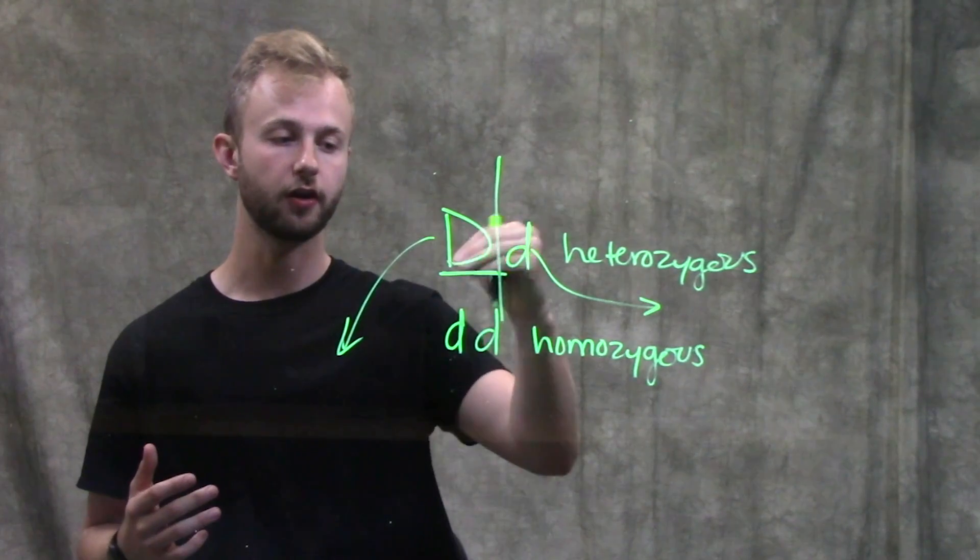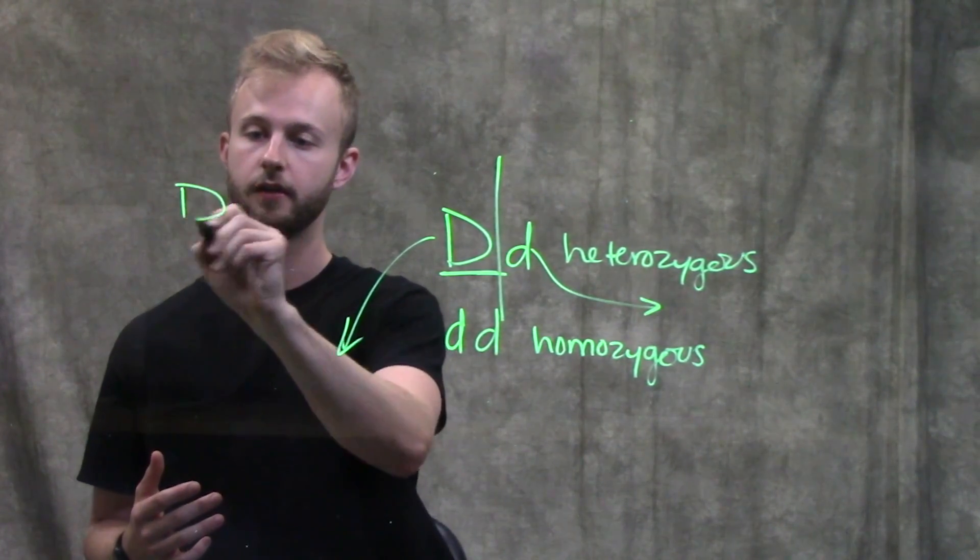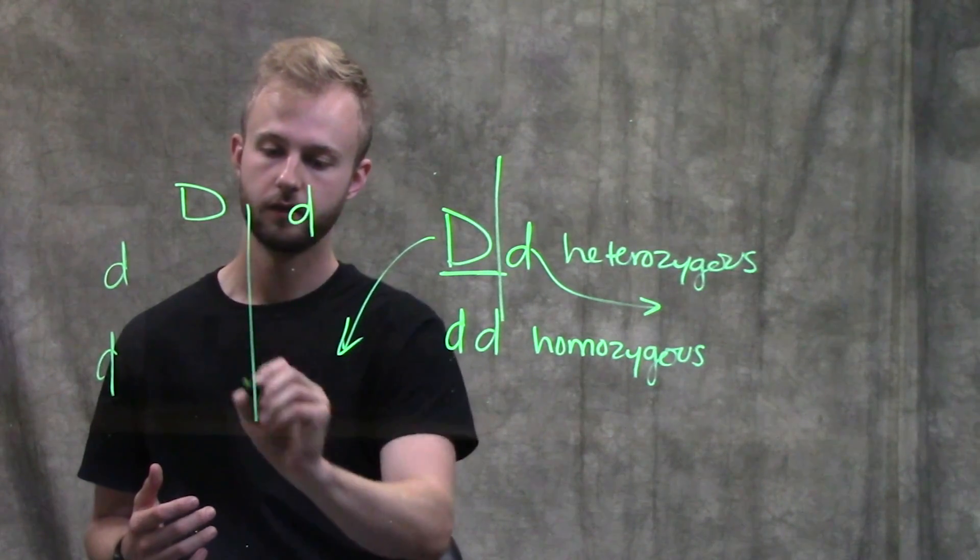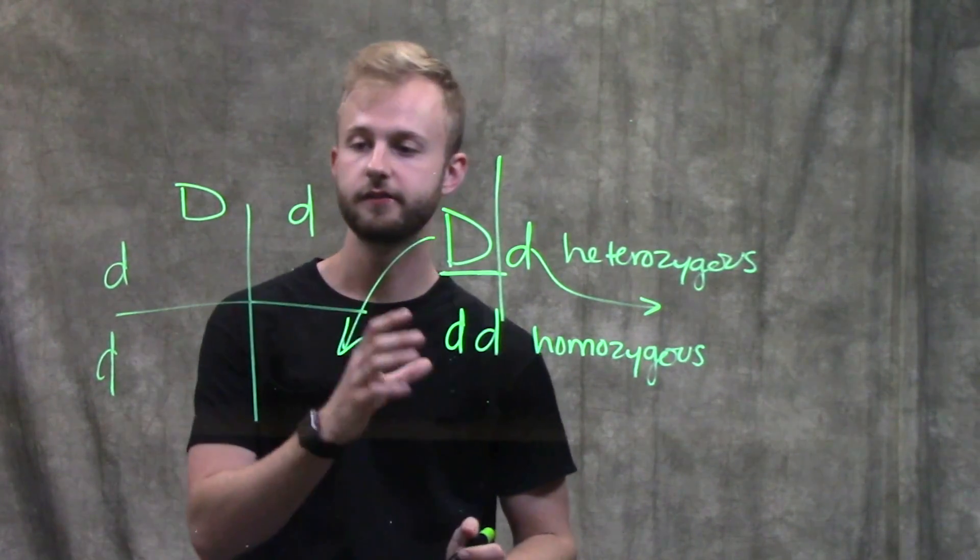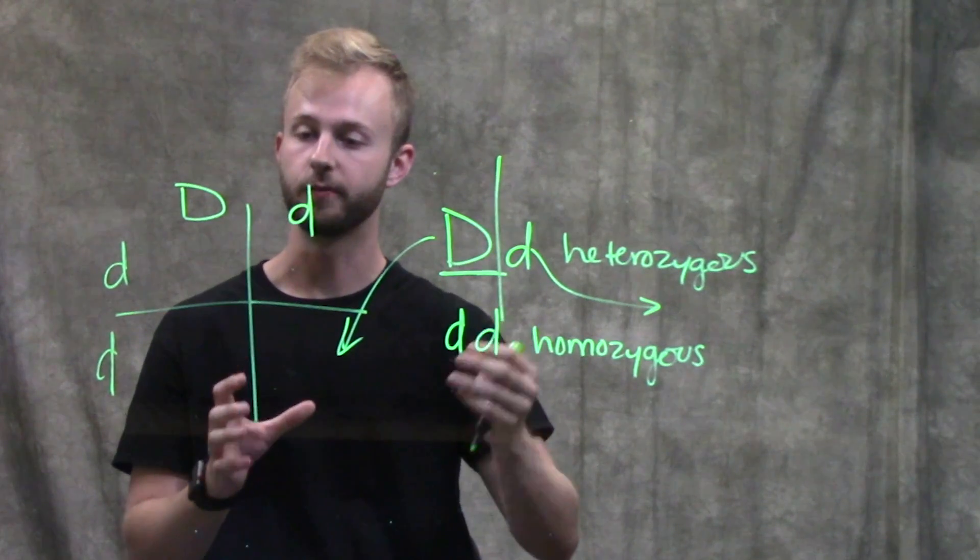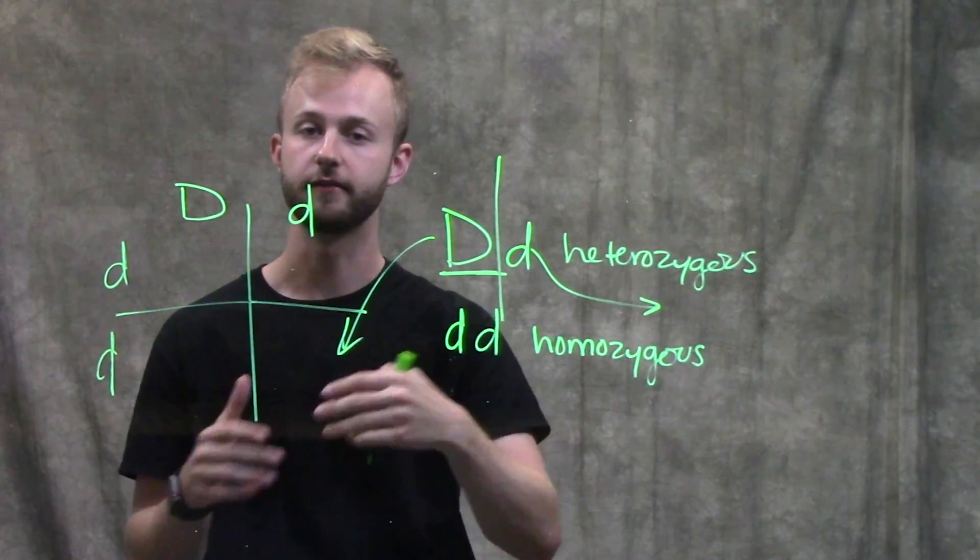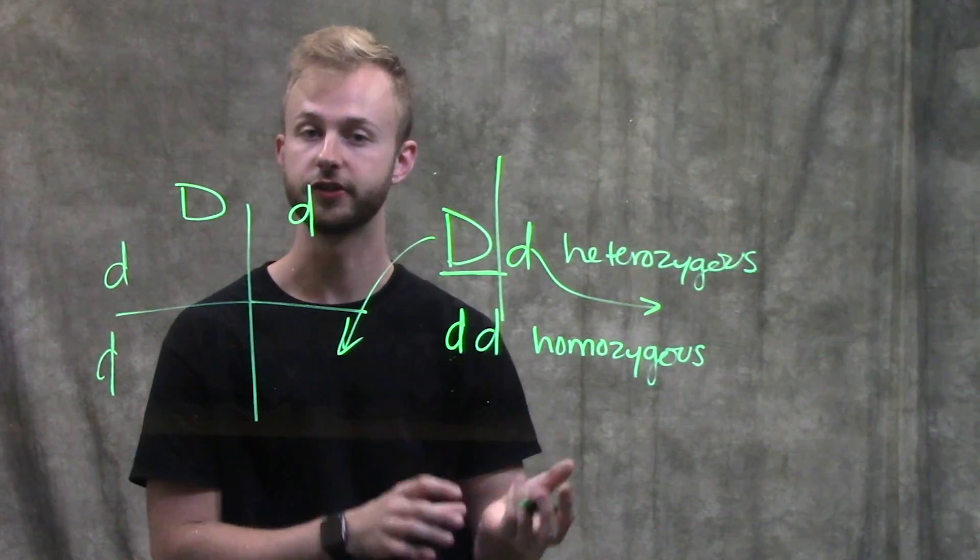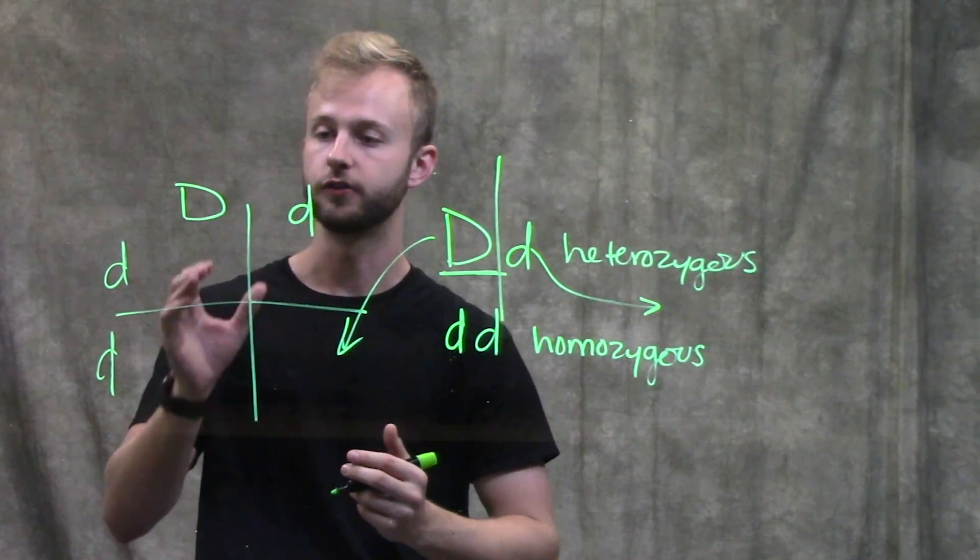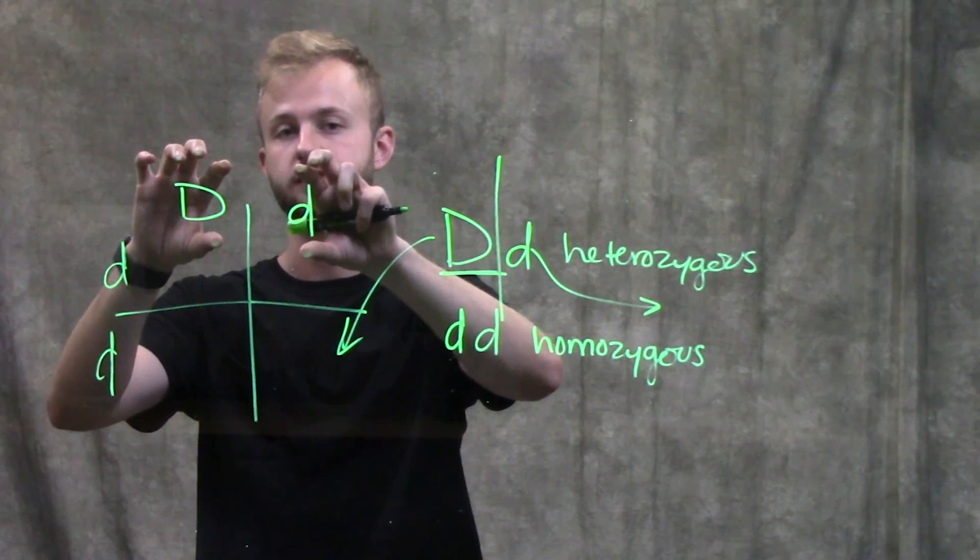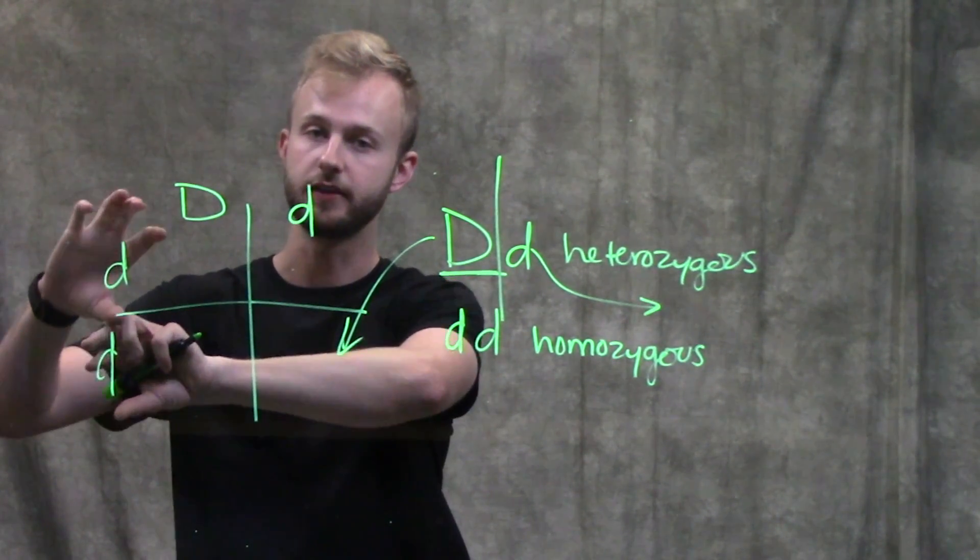If we crossed these two individuals, because these alleles get segregated during gamete formation, they can make different pairs and give rise to offspring with different genotypes and phenotypes. For example, this allele would be in its own gamete and this allele would be in its own gamete, and the same would go for these two.